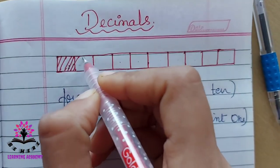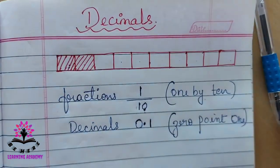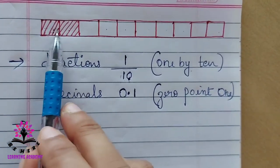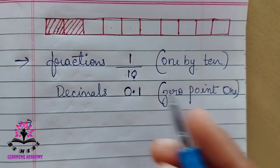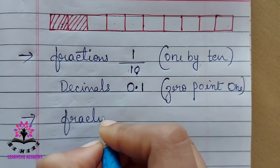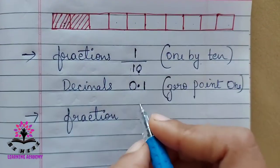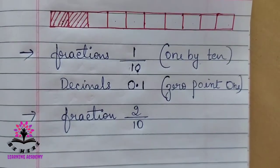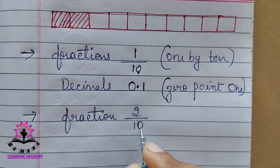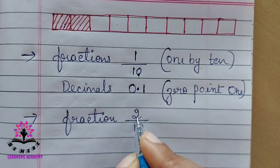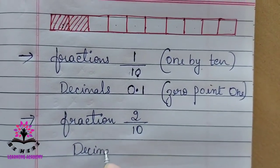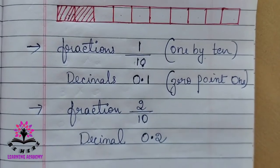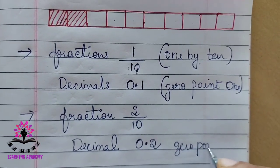Now I will shade one more part. What is the fraction? I have shaded two equal parts out of ten, so the fraction will be 2/10. There is one zero here and the numerator is two, so in the form of decimal I can write it as 0.2. I read this as 0.2.